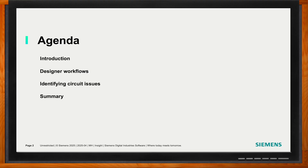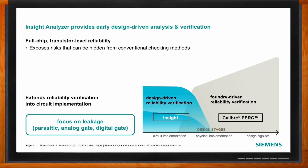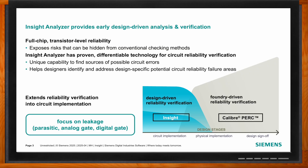Insight Analyzer allows us to do full-chip transistor-level reliability. For the last few decades, Caliber PeRC has been a leader in reliability verification sign-off, particularly for the foundry-driven reliability market — really focused on electrostatic discharge and other physical layout challenges. What we've accomplished with Insight Analyzer is to shift left that whole verification strategy, allowing designers to look at challenges while they're putting transistors into their circuits.